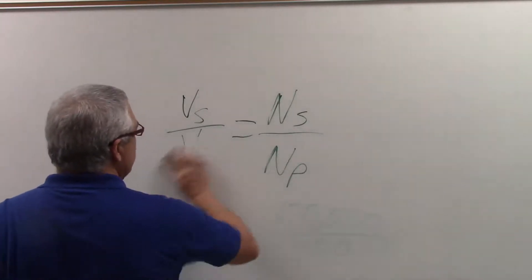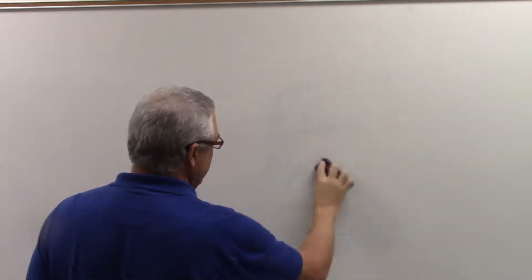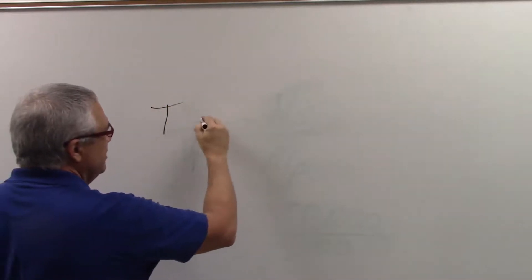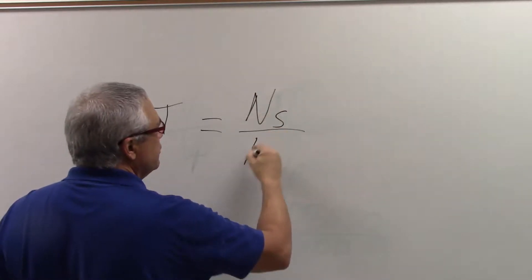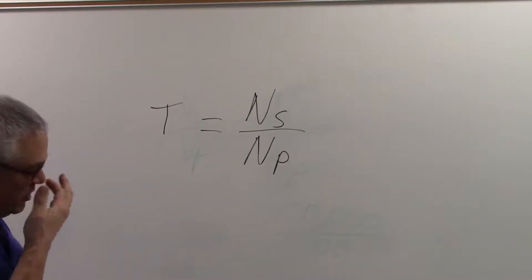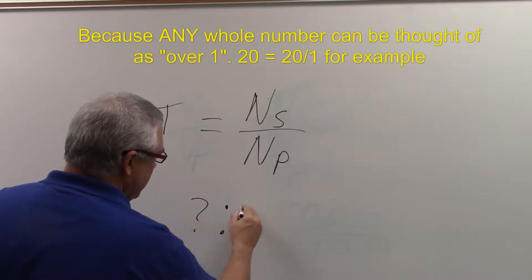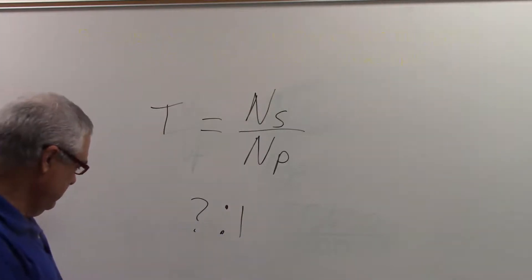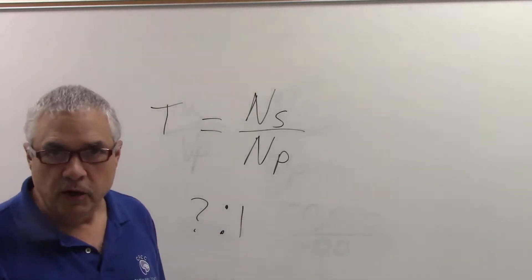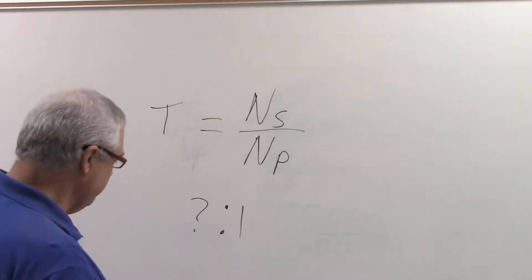Turns ratio is something that sometimes people get confused about, but there's no need to be confused — this is really, really easy. The way this works: turns ratio T is equal to the number of turns on the secondary over the number of turns on the primary, but reduced down. Your turns ratio is always going to be some number to 1 — that's just a convention. So like if you had a 50 to 1 that would be equivalent to 100 to 2, but we say 50 to 1 by convention.